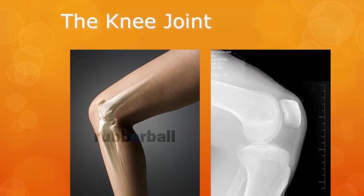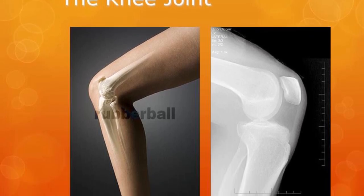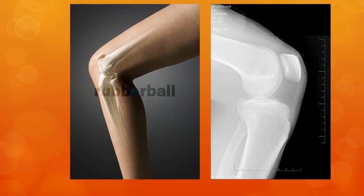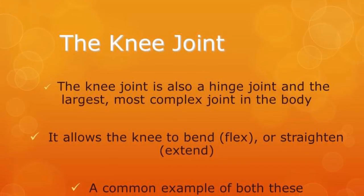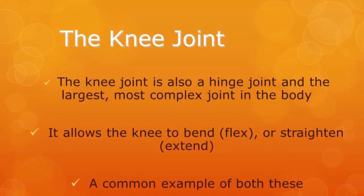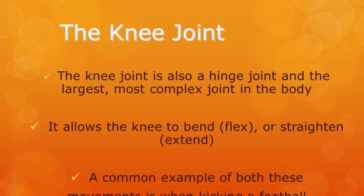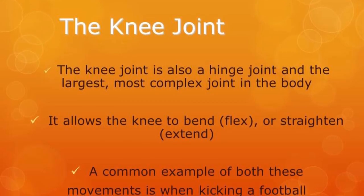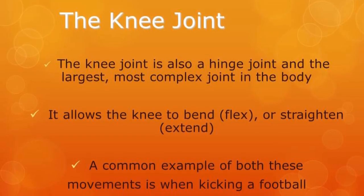Another hinge joint is the knee, which is probably the most complex joint. There are quite a lot of injuries that can occur at the knee joint. It allows the knee to bend — flexion or extension — depending on the activity. A common example of both movements is when kicking a football: striking the ball is extension, while bending the knee in preparation to kick is flexion.